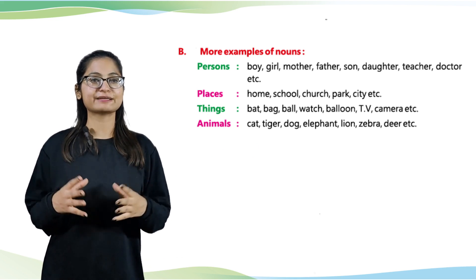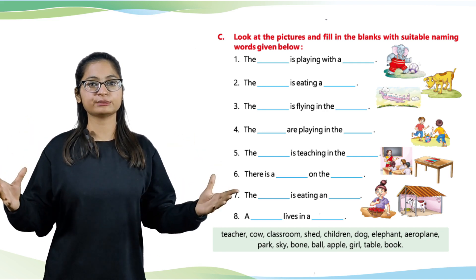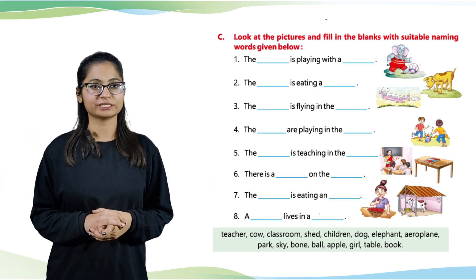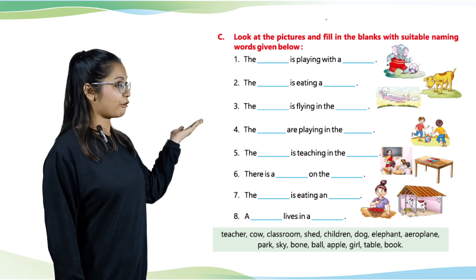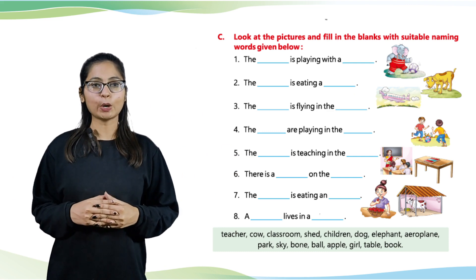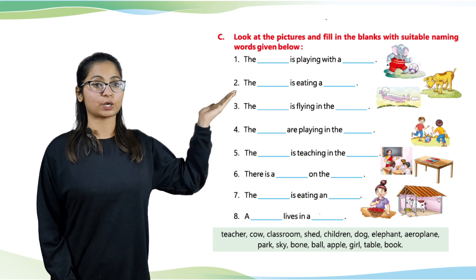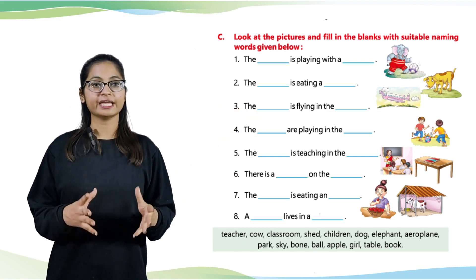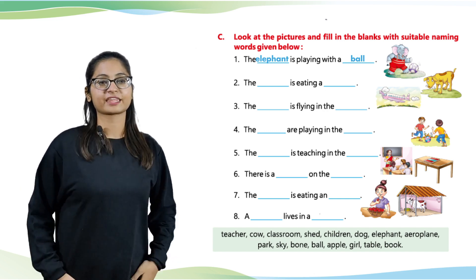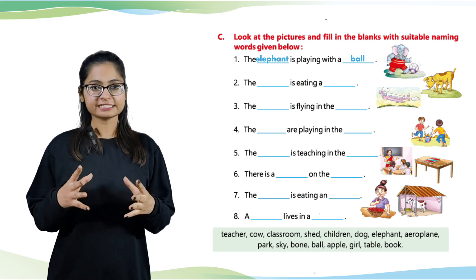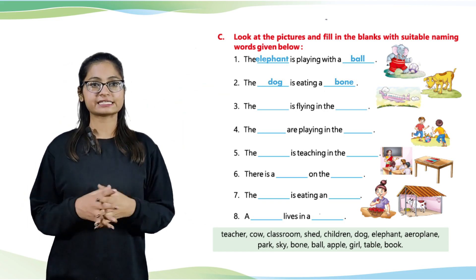Okay students, it's time for part C. Look at the pictures and fill in the blanks with suitable naming words given below. In picture 1, you can see an elephant and a ball — the elephant is playing with a ball. In the second picture, we have a dog eating a bone — the dog is eating a bone.